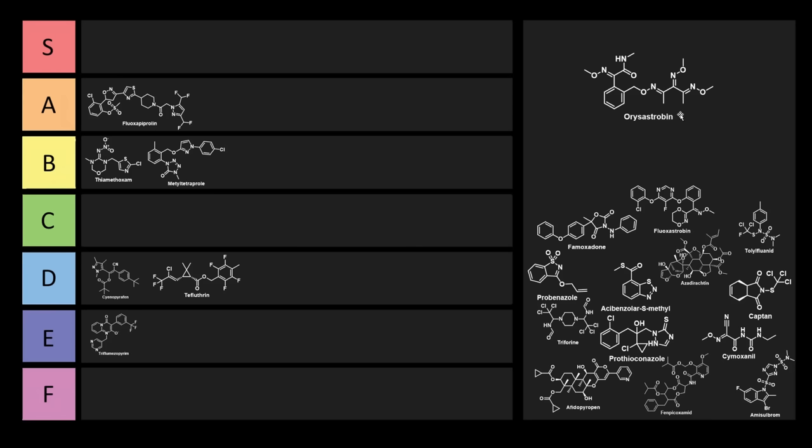Now this is used as a rice fungicide. It's a strobilurin type fungicide. It's used to control leaf and panicle blast, as well as sheath blight in rice. This one's pretty cool. I think this has got to go into S-tier just because of how much drip this molecule has. Absolutely wild.